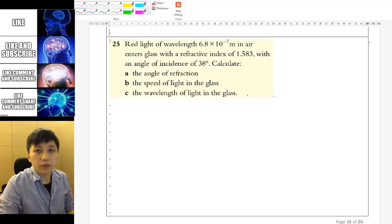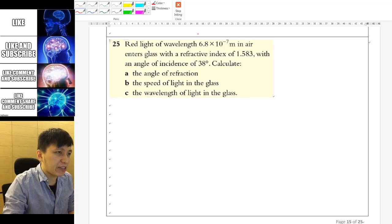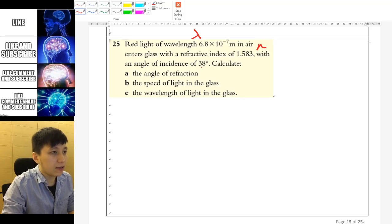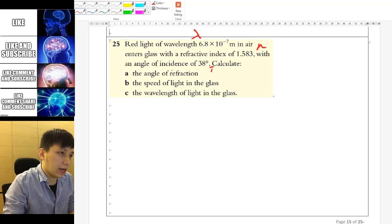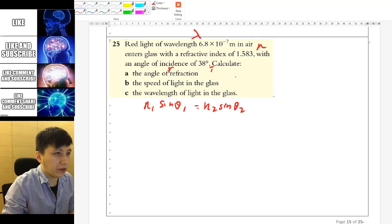Question 25 is very simple. Even if you are in IGCSE, you should know how to do it. So it has given you the wavelength, the refractive index n, and also the incident angle, 38 degrees. And it asks you to find out the refraction angle. So obviously, you are going to find the Snell's law, which is n1 sin theta 1 equals n2 sin theta 2.